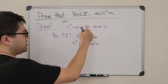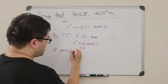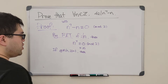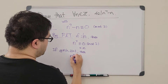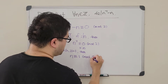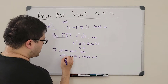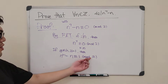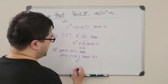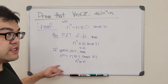Now what if n is not a multiple of 2? If the gcd of n and 2 equals one, then by Fermat's Little Theorem we get that n to the 2 minus 1 power — that is n to the 1 — is congruent to 1 mod 2. In this case n to the seventh power is also congruent to n, since they are both congruent to 1 mod 2.